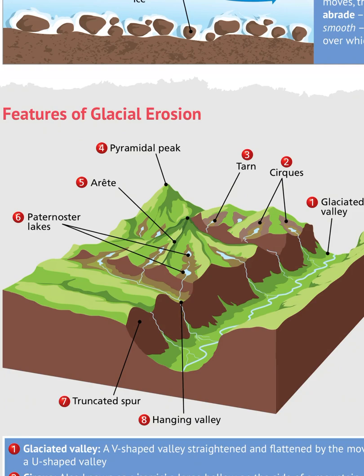Number five is an arête, which is simply a long ridge separating two corries. Number six is paternoster lakes. When a long narrow lake sits in the floor of a U-shaped valley it's called a ribbon lake, but when a few of these ribbon lakes are strung together we call them paternoster lakes.